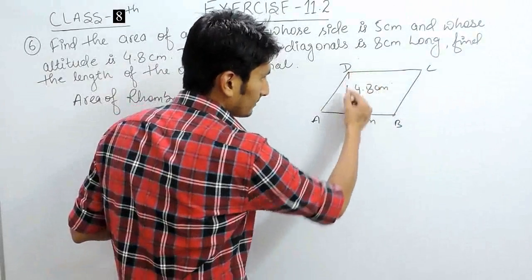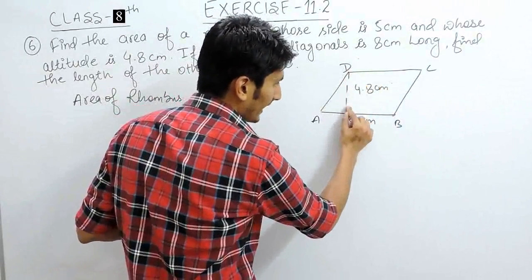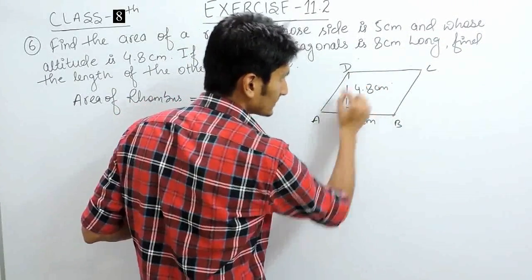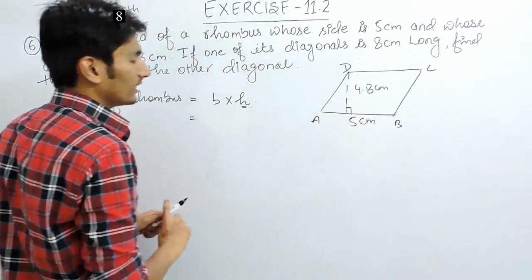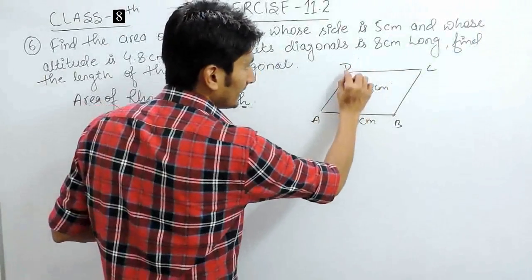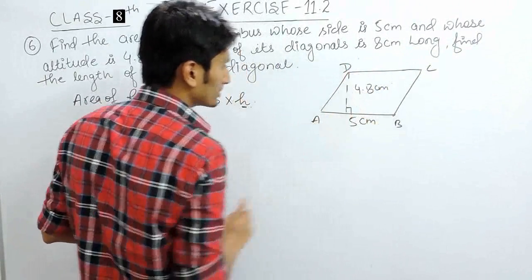This perpendicular height means the height which is making an angle of 90 with this base is known as the perpendicular and this is always the shortest side. Shortest distance between this vertex and the opposite side.